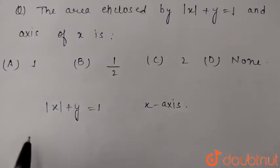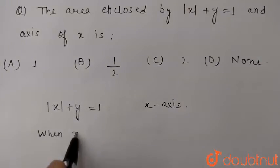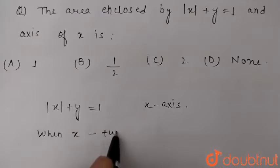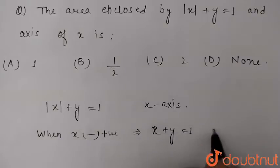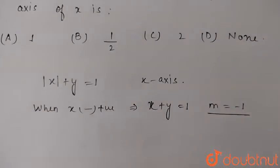So, we can say when x is positive, our equation is x + y = 1, where m = -1, slope = -1, comparing it with y = mx + c.